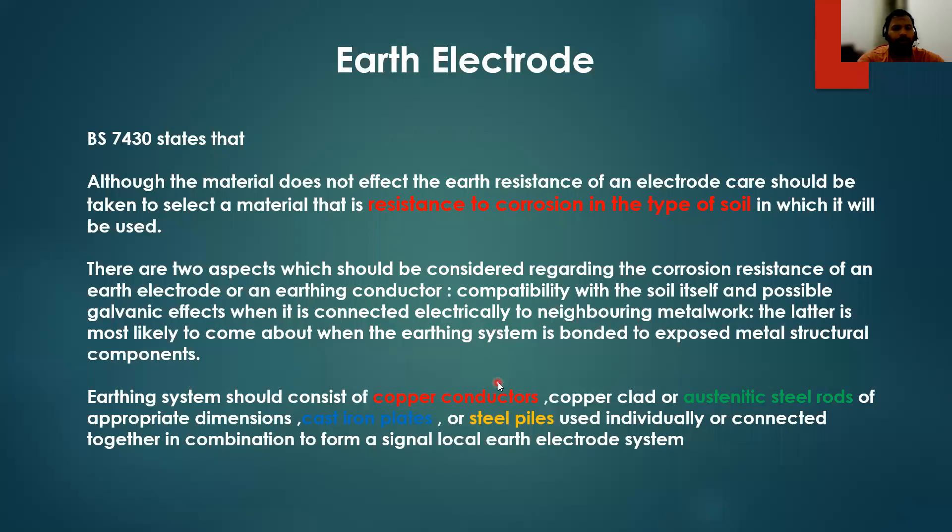Earth rod selection, earth rod electrode - what type of earth rod electrode we have to choose? According to BS 7430 standards, these are the details. Just I explain you the basic concept, what is here. Basically, earth rod material should be either copper conductors or copper clad, austenitic steel rods or cast iron plates or steel piles. These type of materials you can use as an earth rod.